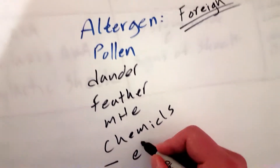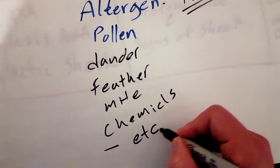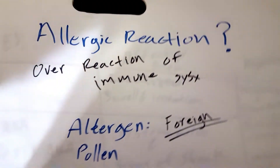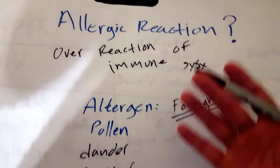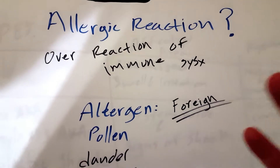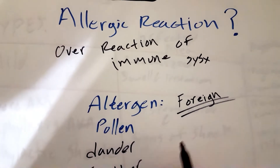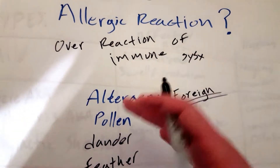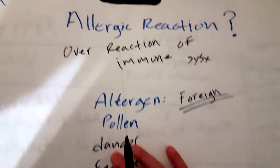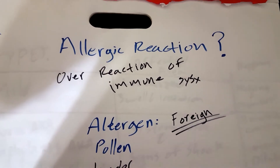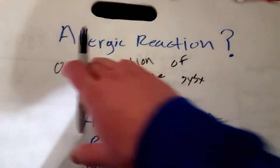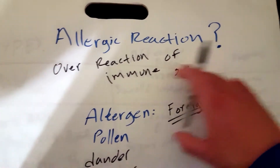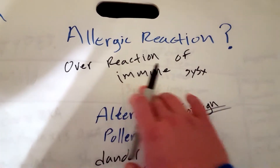So anything can really be an allergen. What happens is the allergen gets in your body, your body thinks it's some kind of virus or bacteria and attacks it. We'll go over how that actually works, but just know an allergic reaction is your immune system overreacting to an allergen.